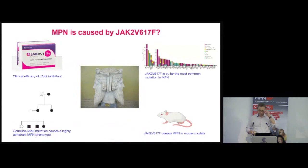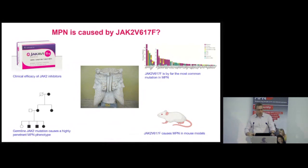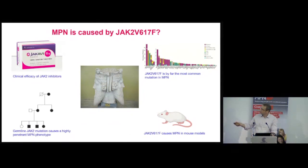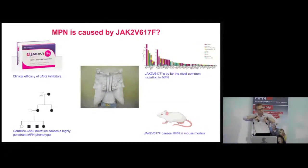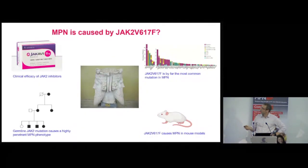I'm going to start with a question about the JAK2V617F mutation, which occurs very commonly in myeloproliferative neoplasms. It's named after Janus, a Roman god of beginnings and ends — a god that faces in two directions — and it's called the Janus activated kinase because the shape of the protein has two different facing kinase domains.